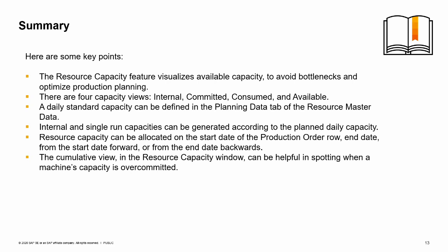Here are some key points to take away from this session. The resource capacity feature visualizes available capacity to avoid bottlenecks and optimize production planning. There are four capacity views: internal, committed, consumed, and available. A daily standard capacity can be defined in the Planning Data tab of the Resource Master Data. An internal capacity can be generated according to the planned daily capacity. Resource capacity can be allocated on the start date of the production order row, end date, from the start date forward, or from the end date backwards. The cumulative view in the Resource Capacity window can be helpful in spotting when a machine's capacity is overcommitted. You have completed the topic — thank you for your time.